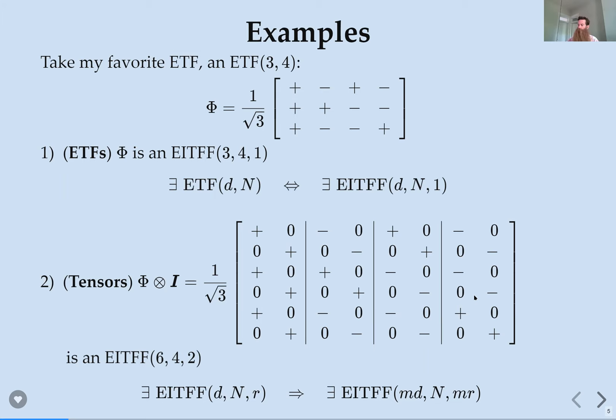This is important because it tells you when hunting for EITFFs what is more prized. We call these tensor-sized, since they could come from a smaller object. If we find an EITFF where the ambient dimension and subspace dimension are relatively prime, we think of it as a more primitive object — a little shinier in the treasure hunt.